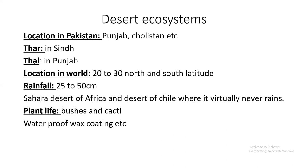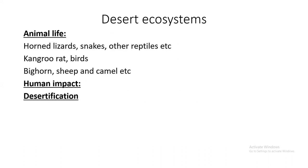Water-storing plants like cacti or circular plants preserve, absorb, and store water inside their bodies. Euphorbia does this during the dry season. So in desert plant life, cacti and similar plants are found.